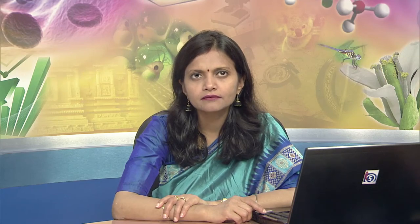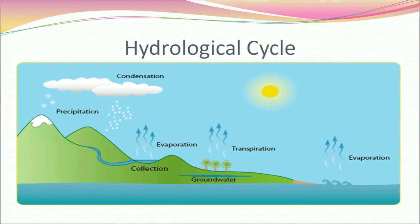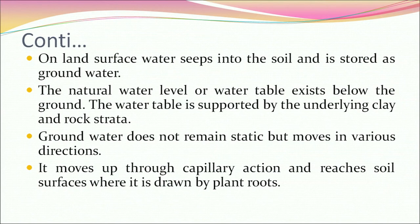The hydrological cycle helps in exchange of water between air, land, sea, and living plants and animals. Solar energy is used to drive the hydrological cycle. Massive evaporation of water from the oceans, cloud formation and rainfall gives us the supply and reserves of fresh water. At sub-zero temperatures, rainwater freezes into snow and in the presence of strong wind forms hail. On the land surface, water seeps into the soil and is stored as groundwater. The natural water table exists below the ground, supported by underlying clay and rock strata, and groundwater moves in various directions including upward through capillary action to reach plant roots.